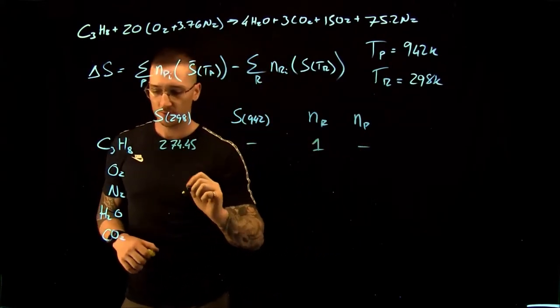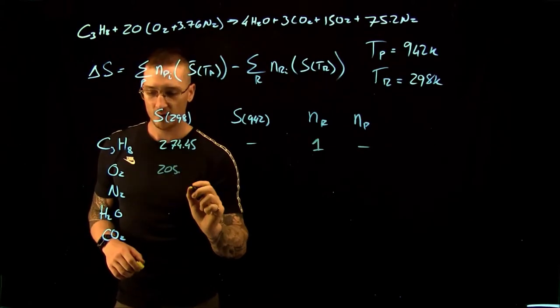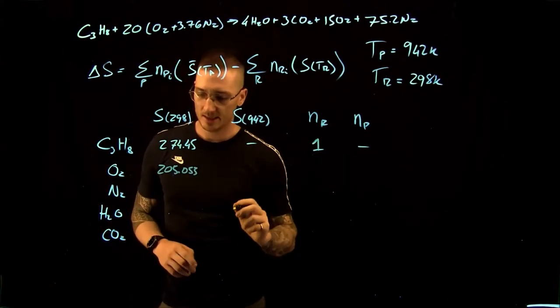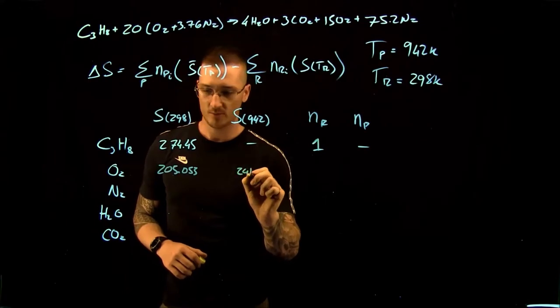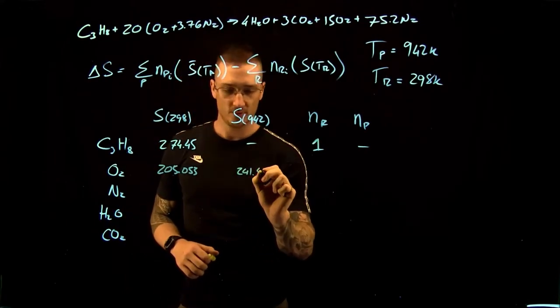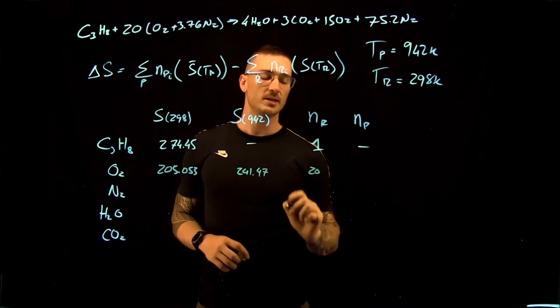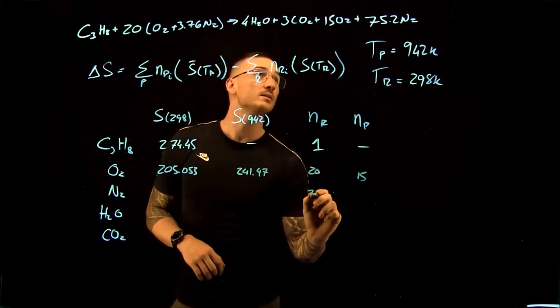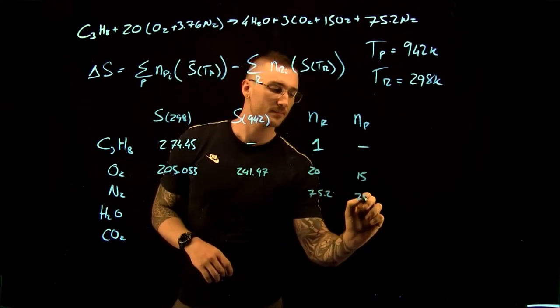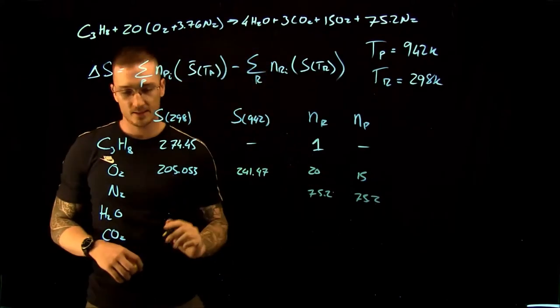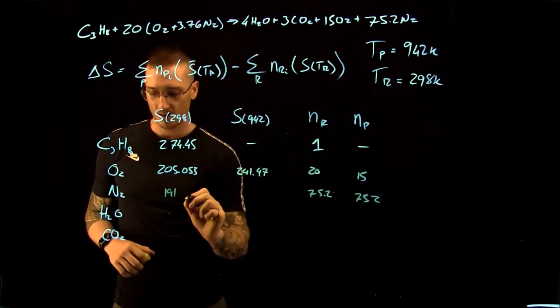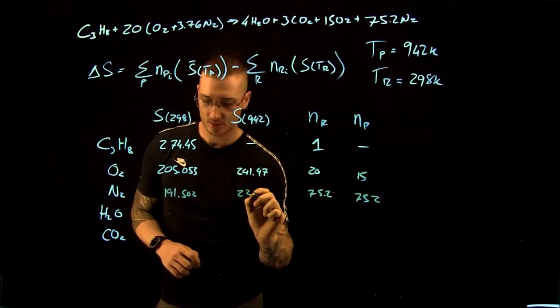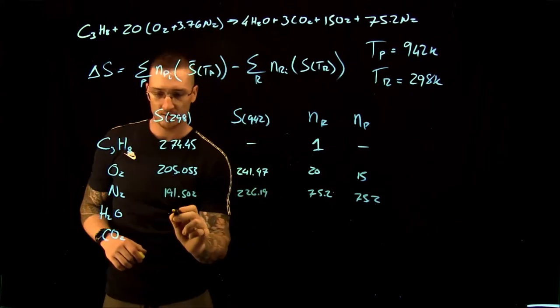For O2, the entropy is 205.053 at 298 and 241.47 at 942. We have 20 in our reactants and 15 in our products. For N2, we have 75.2 for both here. And then this is 191.502 and 226.19.